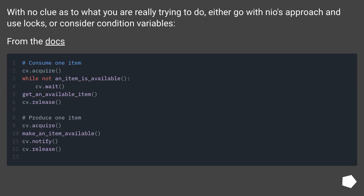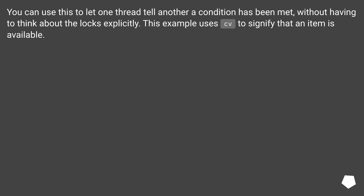With no clear context as to what you are really trying to do, go with an approach that uses locks, or consider condition variables from the docs. You can use this to let one thread tell another that a condition has been met, without having to think about the locks explicitly.